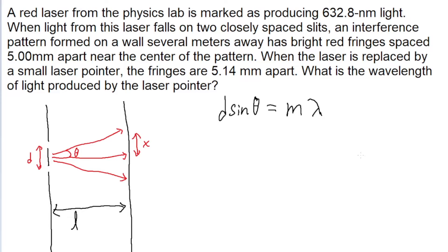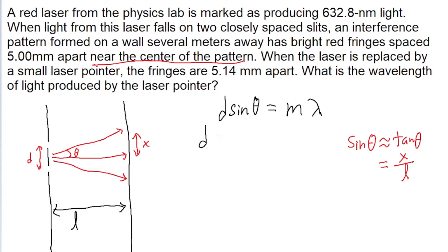There are a few things to consider here. First, we're not given theta in the problem, so we don't have sine of theta. But since we're looking at the fringes near the center of the pattern, we can assume theta is small enough to use the small angle approximation, which states that sine of theta is approximately equal to tangent of theta. Looking at the geometry of our diagram, tangent of theta equals opposite over adjacent for right triangles, so tangent of theta equals x divided by L. We can replace our constructive interference equation with D multiplied by x divided by L equals M lambda.